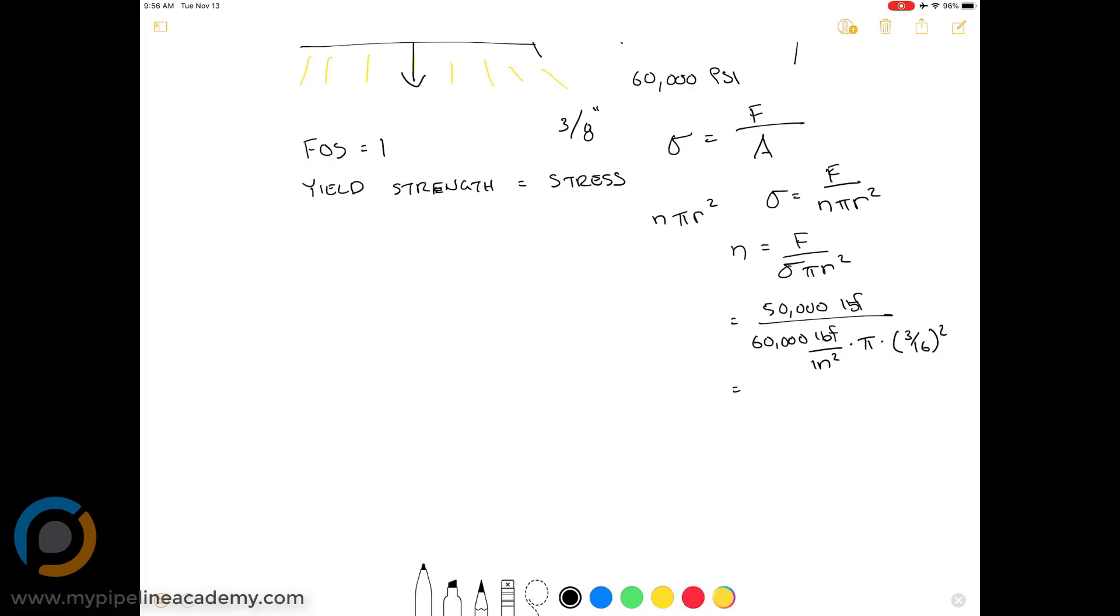So let's do some math there. I'm just going to pull up a calculator here on my computer. So 60,000 times 3.14 times 0.1875 times 0.1875 equals 6,623.4. And that is the denominator. The numerator is 50,000 pounds force. So for a factor of safety of one, we get 50,000 divided by 6623 equals seven and a half. Seven and a half bolts. Of course, we'd never use half a bolt, so we'd probably just round up to eight bolts.